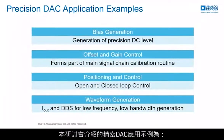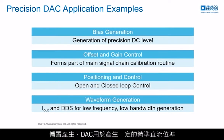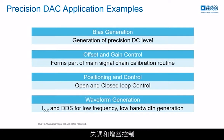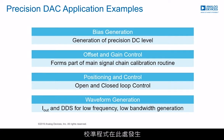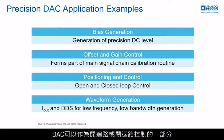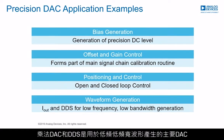The precision DAC application examples covered in this presentation are: bias generation, where the DAC generates a precision DC level; offset and gain control, where the DAC is present in the signal control stage of the main signal chain where the calibration routine takes place; positioning and control, where the DAC can be part of an open or closed loop control; and waveform generation, where multiplying DACs and DDS are the key DACs used for low-frequency, low-bandwidth waveform generation.